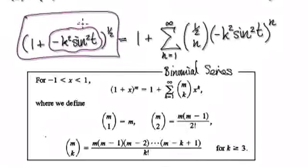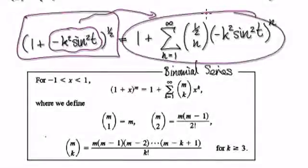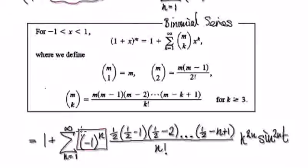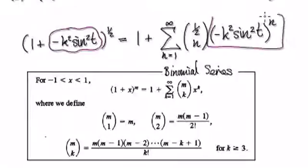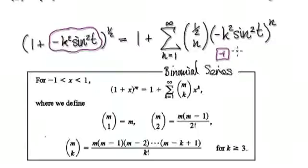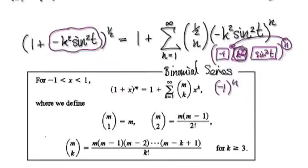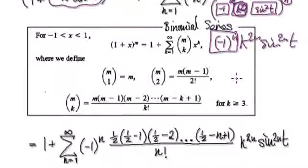From here you can turn it into a series. This thing here equals this thing here. Looking at this, you can imagine the negative thing here as being a block of minus 1, then a block of k squared, then sine squared t, all to the power of n. So you get minus 1 to the power of n, then k to the 2n, then sine to the 2n of t. So this block here is actually this here.